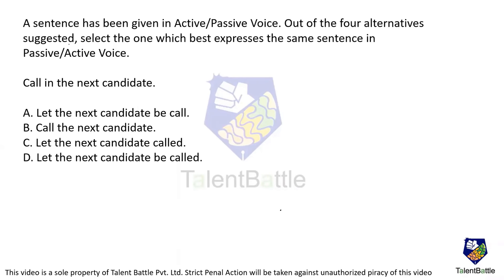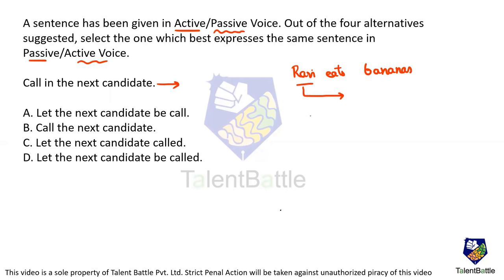This question asks us to convert a sentence from active to passive voice, or passive to active. First, we identify the voice. For example: 'Ravi eats bananas.' There are three parts in a sentence — subject, verb, object. Here, Ravi is the subject performing the action. Whenever the subject performs the action, it is active voice.